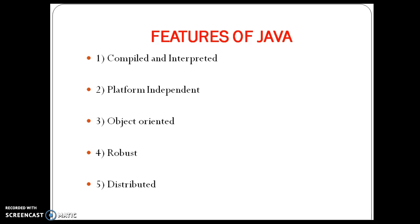By the concept of garbage collection, we can say Java is robust. Another concept that contributes to robustness is exception handling. We can handle errors at runtime, thus eliminating the risk of system crash. By using these two concepts — garbage collection and exception handling — we can say Java is a robust language.